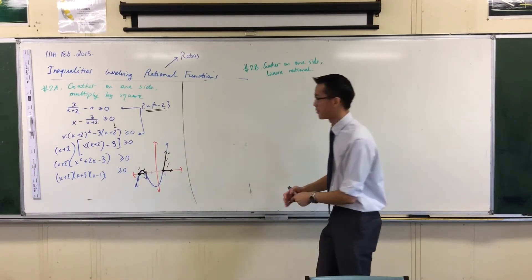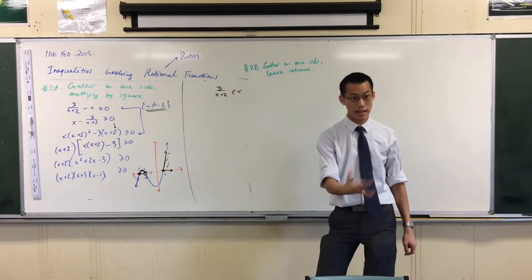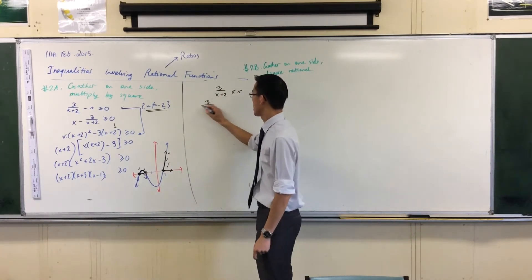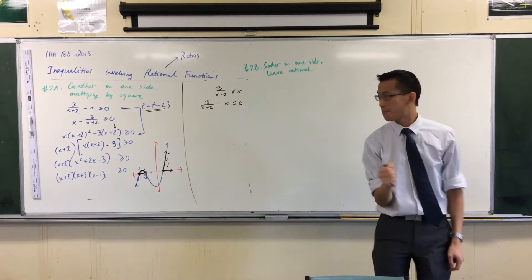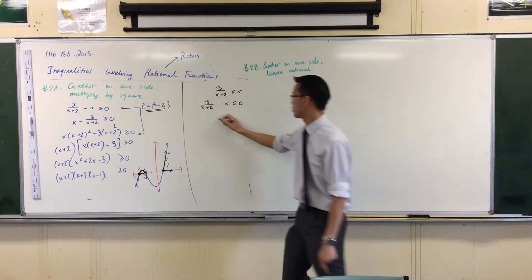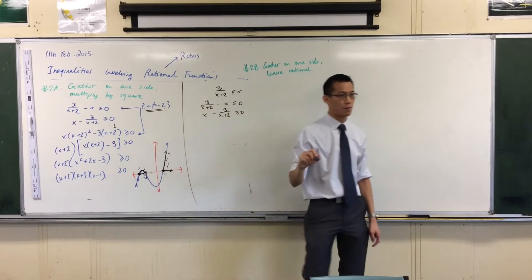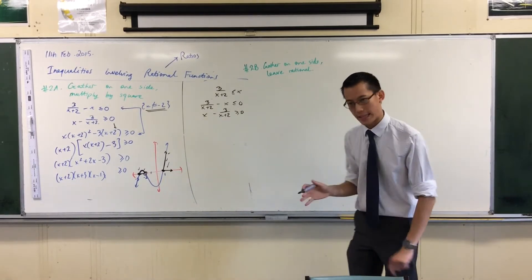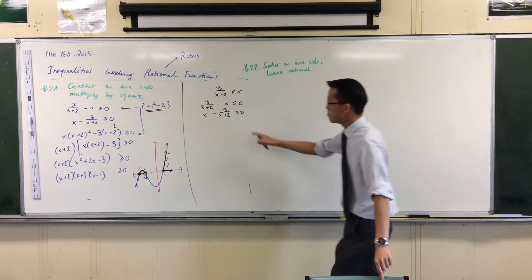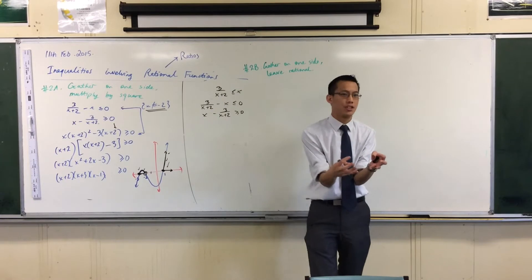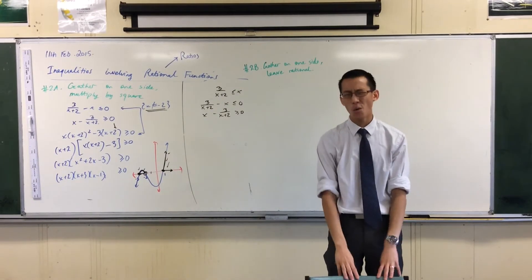Starting with my first line again, 3 over x plus 2 is less than or equal to x. Let's gather on one side. So far nothing is different from the previous approach. But instead of multiplying through by a square and making this a cubic problem, I just want this thing to be one function so that I can graph it. I don't want to multiply by a square.